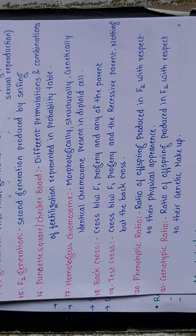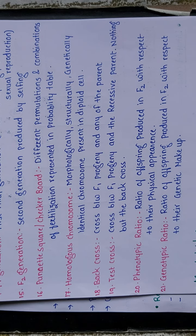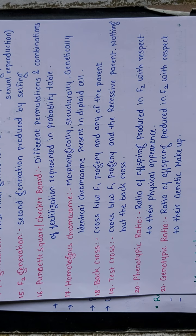Your homework is to memorize each and every terminology — they may come as one-mark questions. You must mug up all these terms before coming to the next class, along with the seven contrasting characters of Mendel.